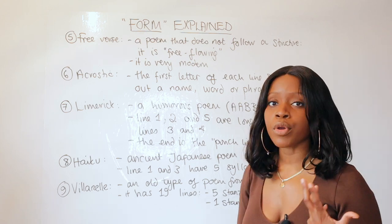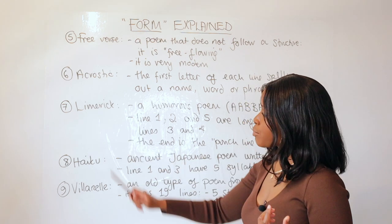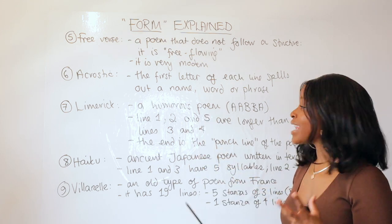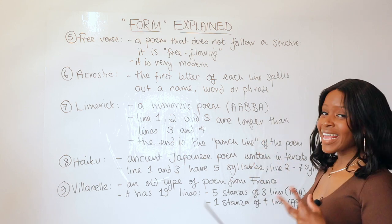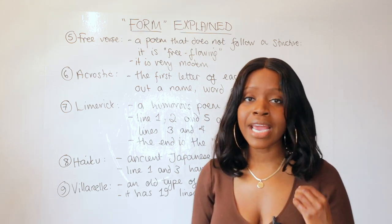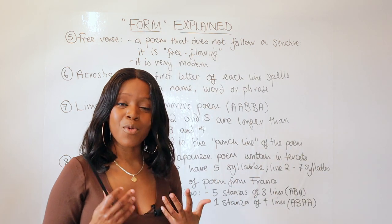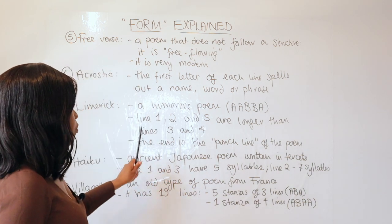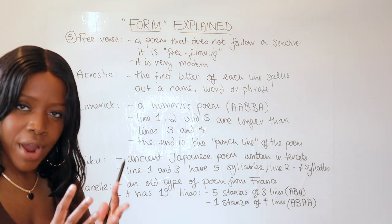The next form to be aware of, which is again very well known, is what we call the limerick. A limerick is a very humorous type of poem, and it has an AABBA structure. So a limerick is a poem that's supposed to be quite funny. In terms of this style of poem, it does follow a specific way of laying out—it has a layout.